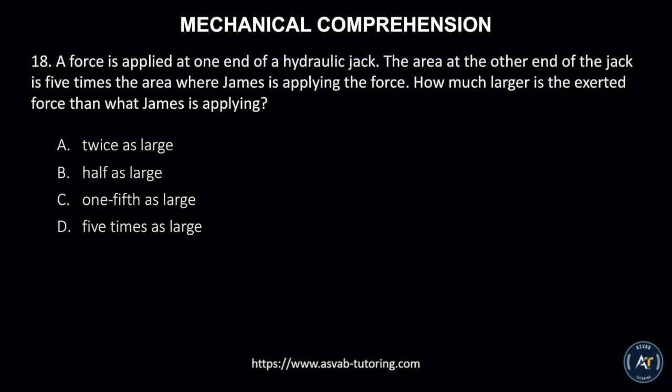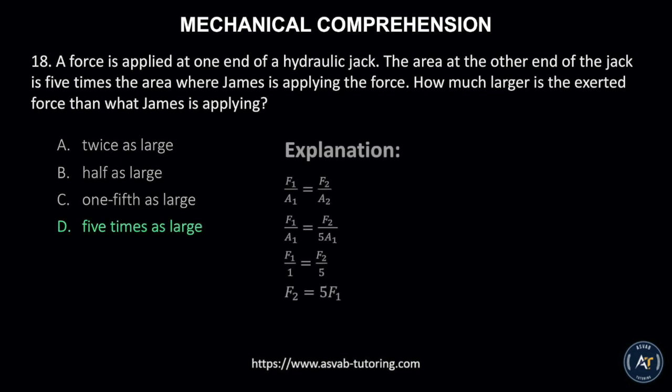Number 18. A force is applied at one end of a hydraulic jack. The area at the other end of the jack is five times the area where James is applying the force. How much larger is the exerted force than what James is applying? A. Twice as large, B. Half as large, C. One-fifth as large, or D. Five times as large. The correct answer is D. Five times as large.